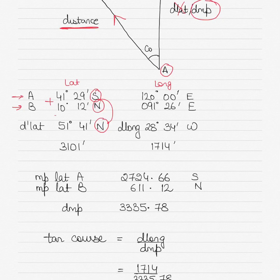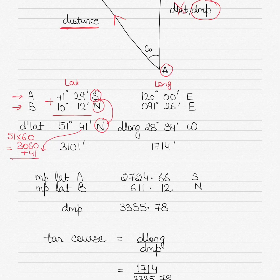So when you add the two, you get 51 degrees 41 minutes as your D-Lat. But we convert it into minutes by multiplying the degrees by 60 first. So 60 multiplied by 51 would be 3060, and then you add the remaining minutes to this, plus 41, will give you 3101. That's what we have here.